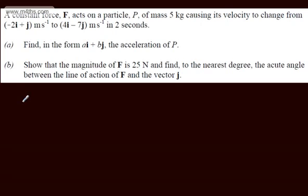In this question, we're told a constant force F acts on a particle P of mass 5 kilograms, causing its velocity to change from minus 2i plus j meters per second to 4i minus 7j meters per second in 2 seconds.